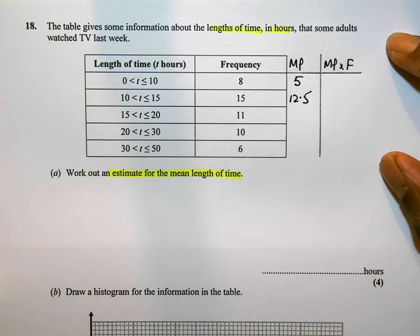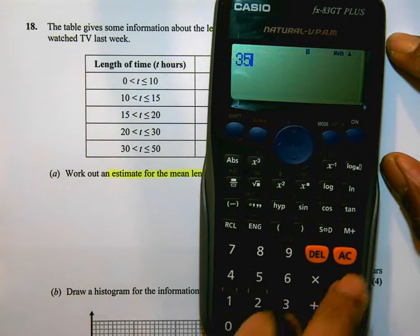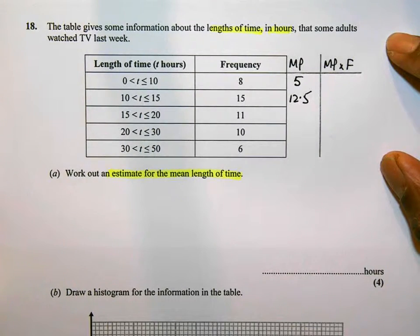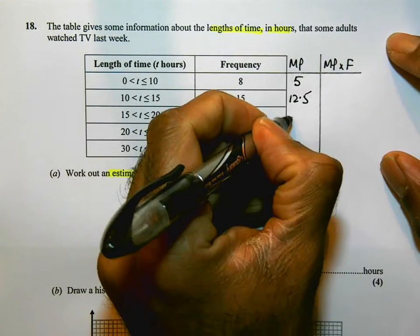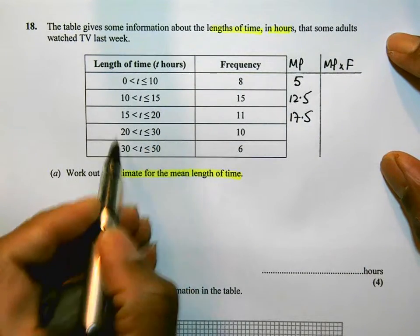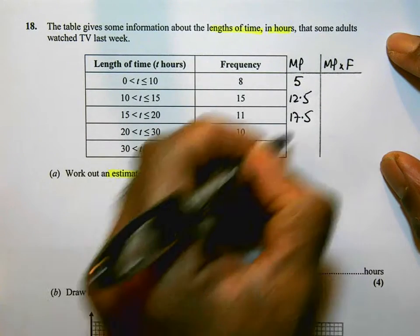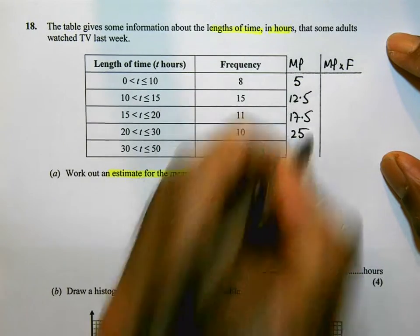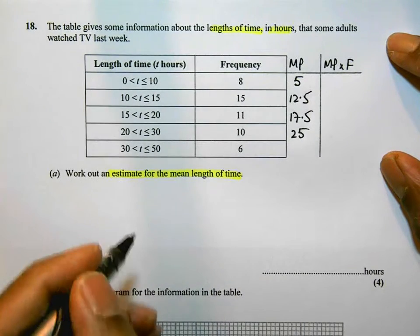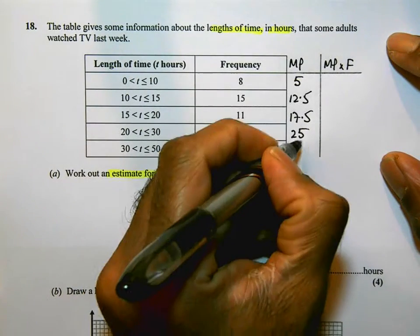15 to 20, those two add together to give me 35, divided by 2, the midpoint is going to be 17.5. From 20 to 30, add them together, that's going to be 50, half of that is 25. And you can see that by looking at the groups as well. 30 to 50, they add up to 80, half of 80 is 40.